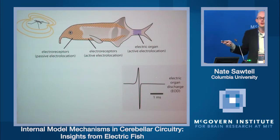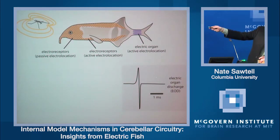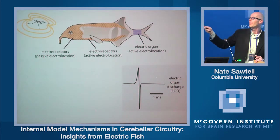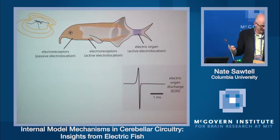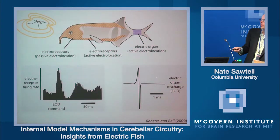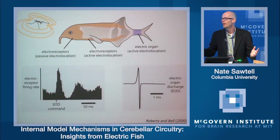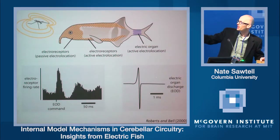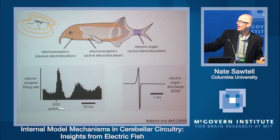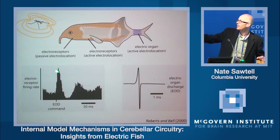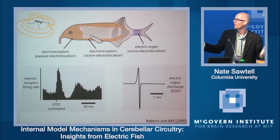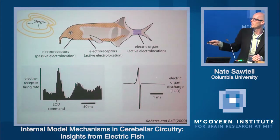We're going to be focused on the plight of the passive electrosensory system. From the perspective of this system, the fish's large electric organ discharge pulse is a severe source of self-generated noise. This is a histogram of the spiking response of one of these passive electroreceptors, and after each electric organ discharge or EOD pulse, this receptor is sent into a ringing pattern of activation. This is a problem for a couple of reasons.